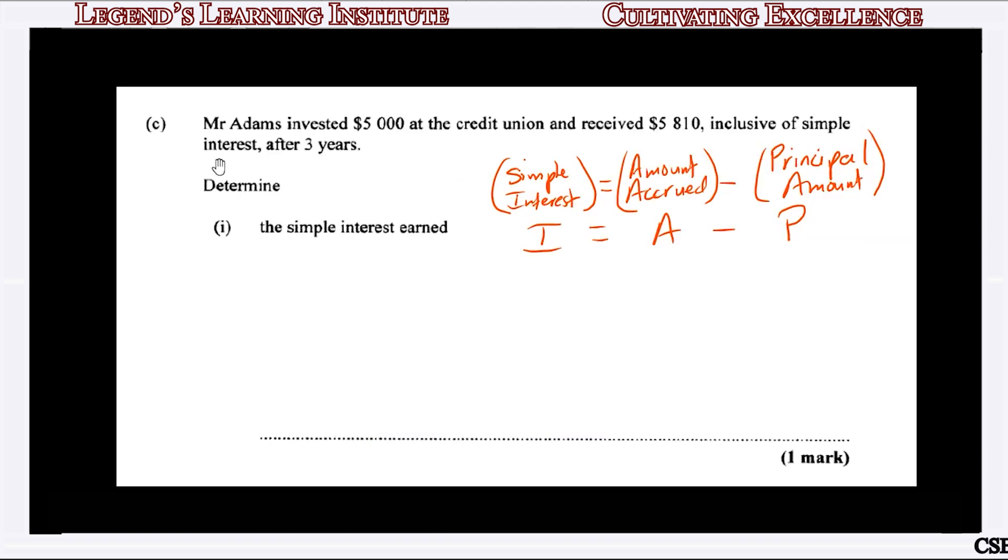1C is based on consumer arithmetic. The question says Mr. Adams invested $5,000 at the credit union and received $5,810 inclusive of simple interest after three years. Determine the simple interest earned.